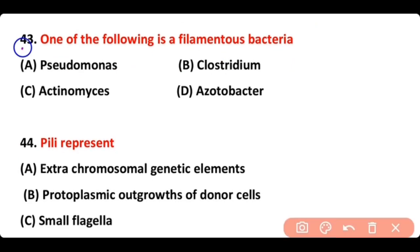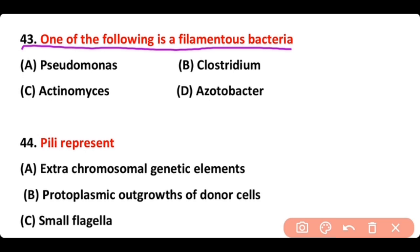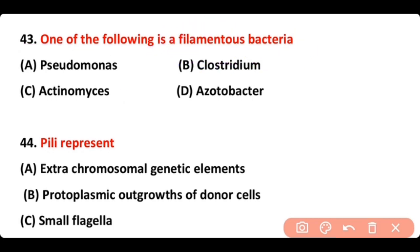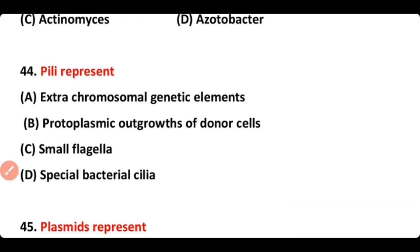Question number 43: One of the following is filamentous bacteria — Pseudomonas, Clostridium, Actinomycetes, or Azotobacter? The correct answer is option C. Actinomycetes is a group of filamentous bacteria.